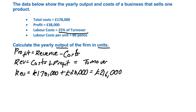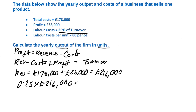£178,000 plus £38,000 comes to £216,000. So that's what the turnover is. The next thing we need to calculate is — now that we know the turnover is £216,000 — the labour costs, which are 25% of that number. So if we do 0.25 times £216,000, then we get the labour costs, which equal £54,000.